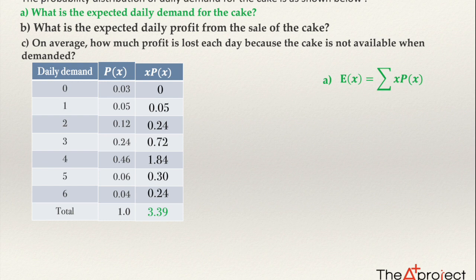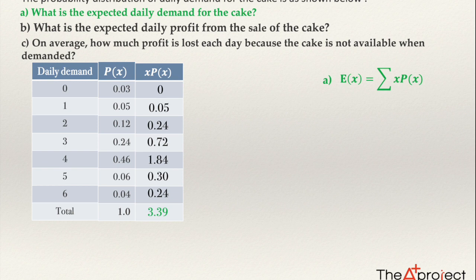So on average, 3.39 fancy fruit top cakes are demanded per day. We have computed the expected daily demand — the average demand. That's perhaps why this bakery restocks every day with four cakes, because the expected demand is 3.39 and they are expecting around four cakes. So this is the answer to the first question.